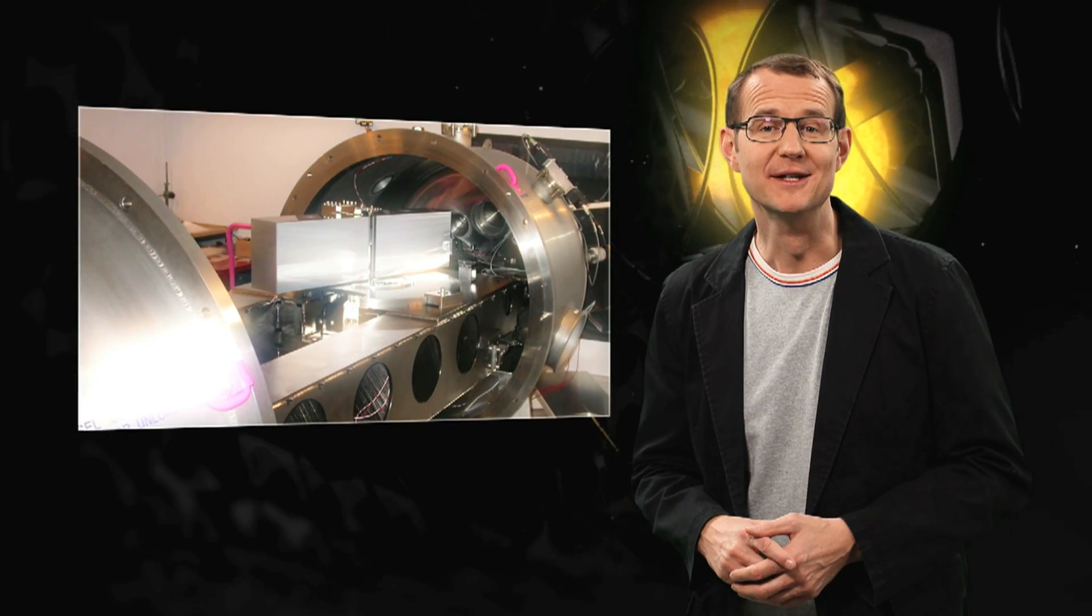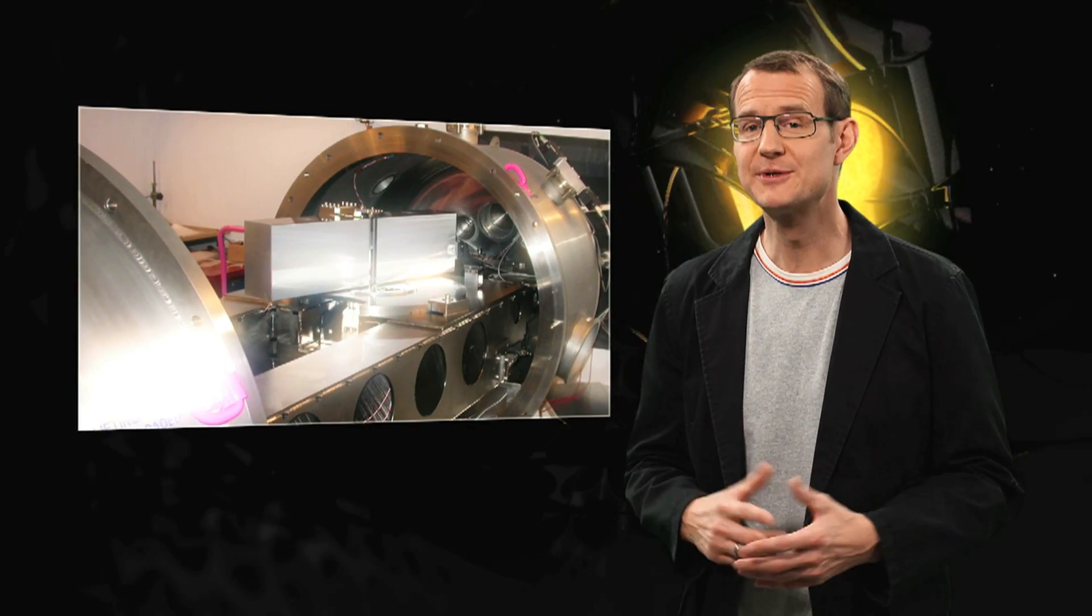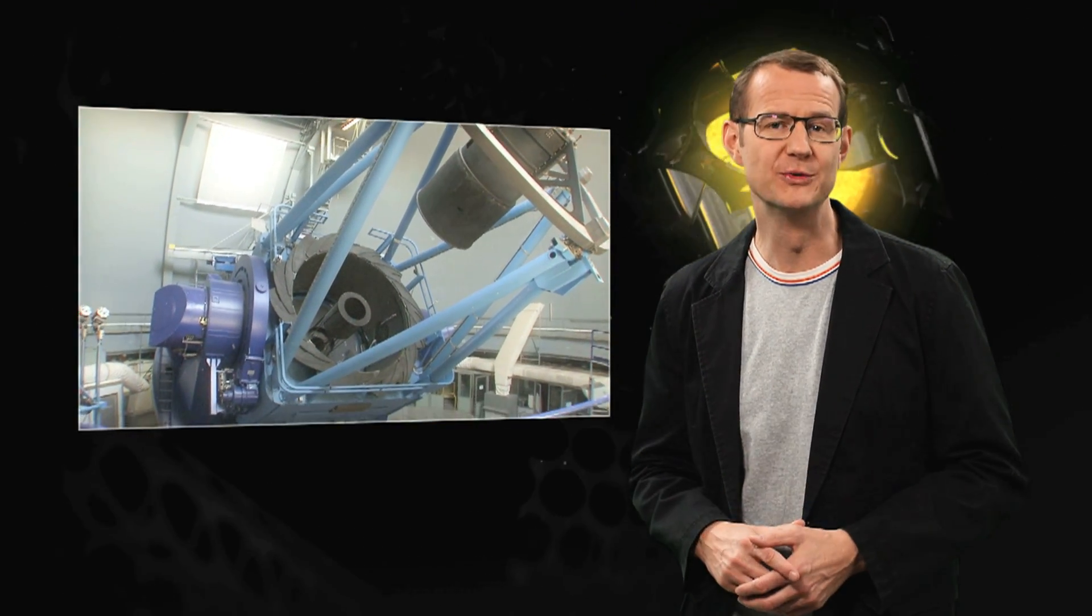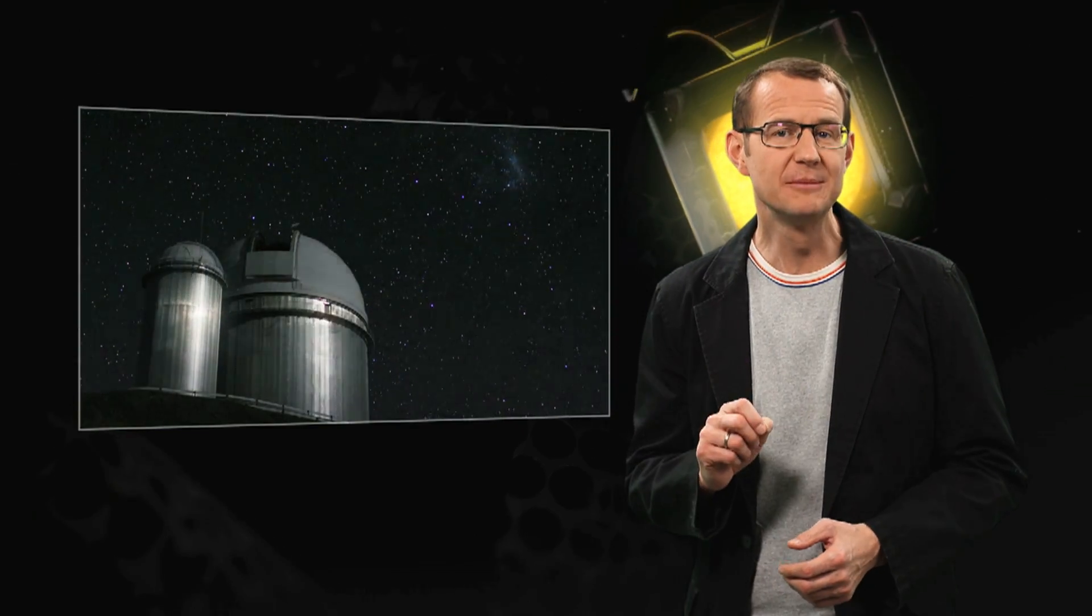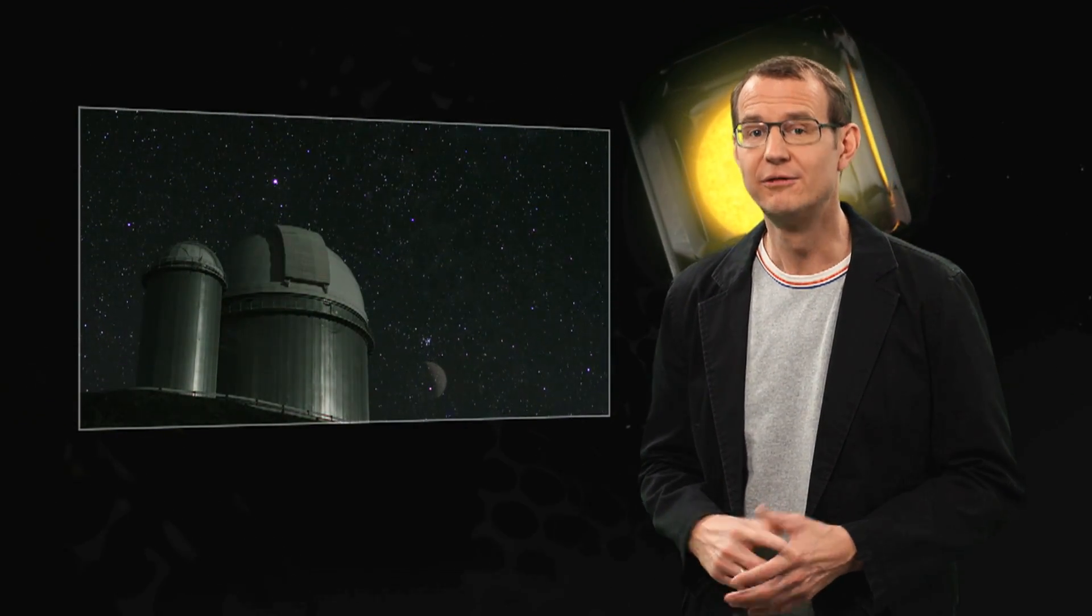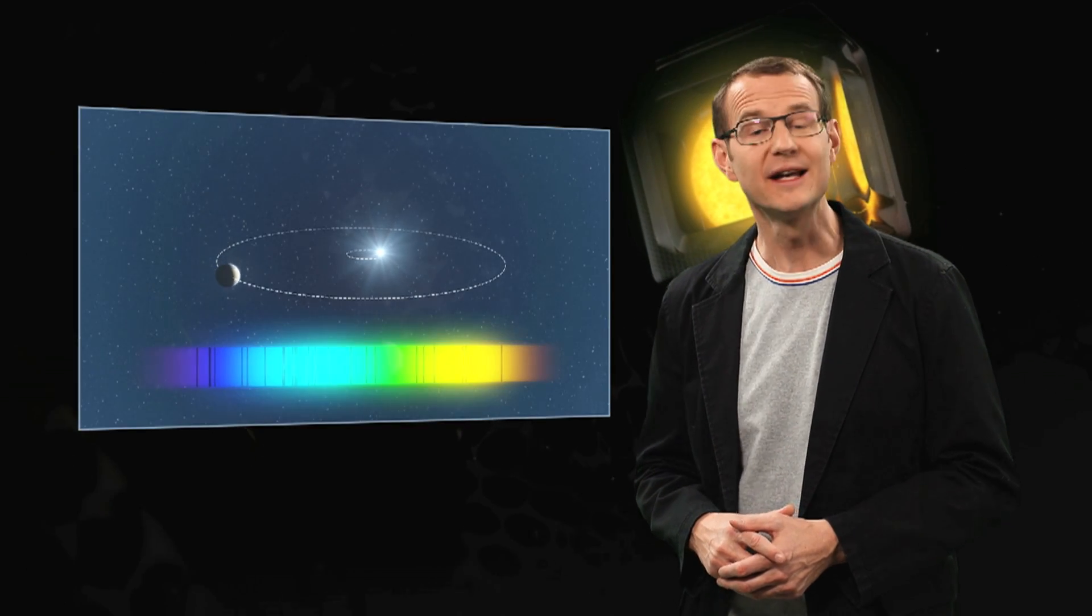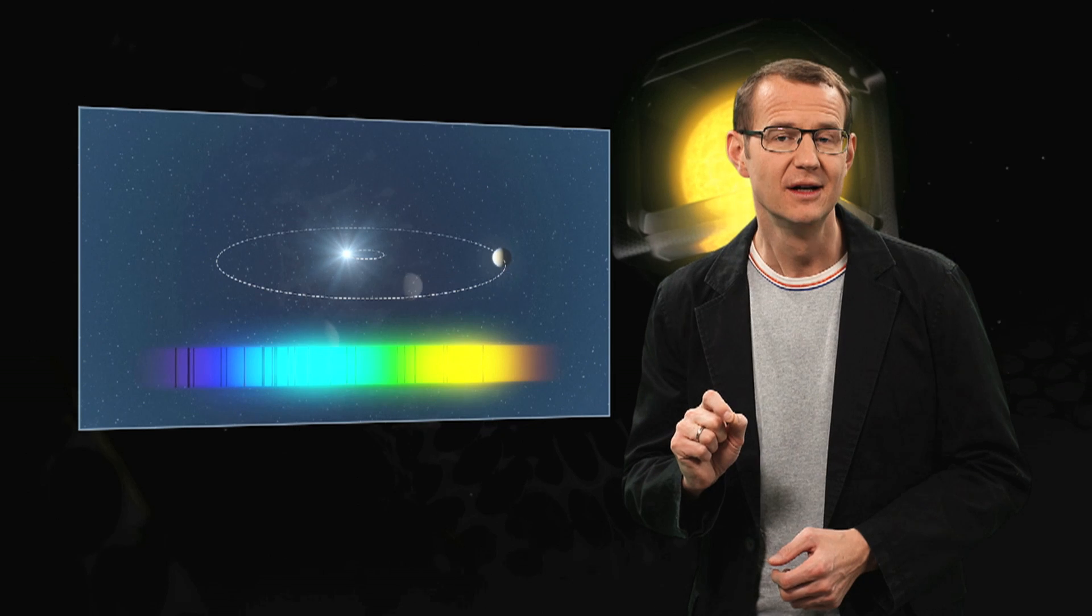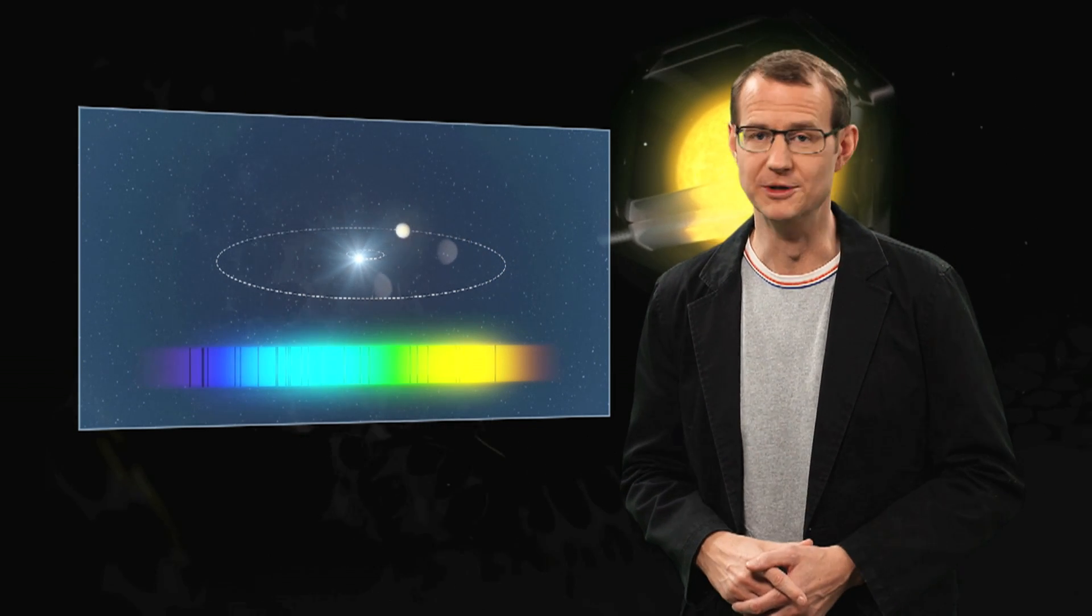To find the new exoplanets, the astronomers used the HARPS instrument on the 3.6-metre telescope at ESO's La Silla Observatory. They carefully monitored 88 selected stars in Messier 67 for a number of years. That allowed them to look for the tiny tell-tale motions of the stars that reveal the presence of orbiting planets.